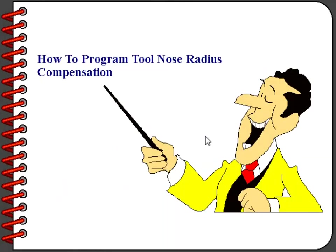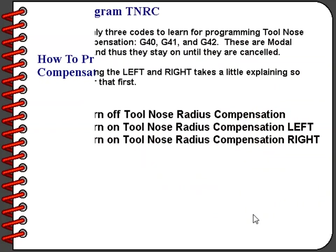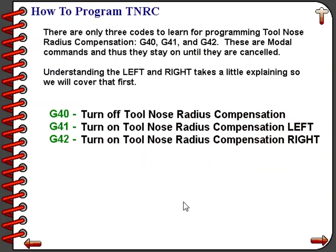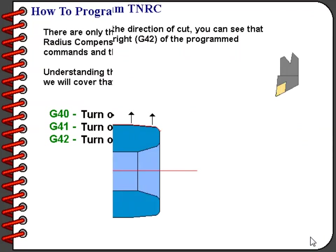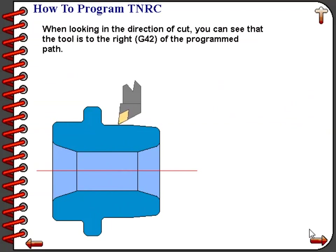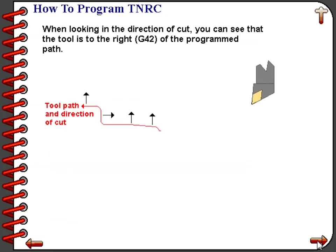Now let's look at how we program tool nose radius compensation. There are really only three codes to learn. G40 turns off tool nose radius compensation — it is a modal command. G41 turns on tool nose radius compensation when the tool is to the left of the programmed path. G42 turns on tool nose radius compensation when the tool is to the right of the programmed path. The trick to understanding the difference between G41 and G42 is understanding how the tool is approaching the workpiece.